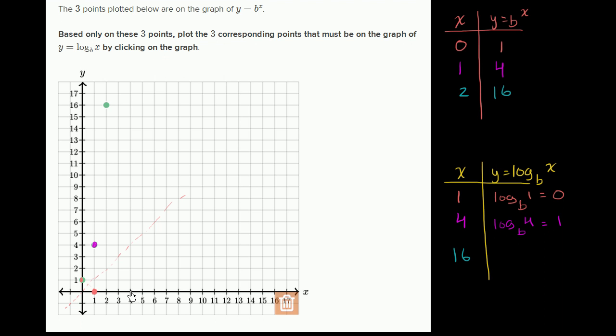So when x equals 4, y equals 1. Notice, once again, it is a reflection over the line y equals x.